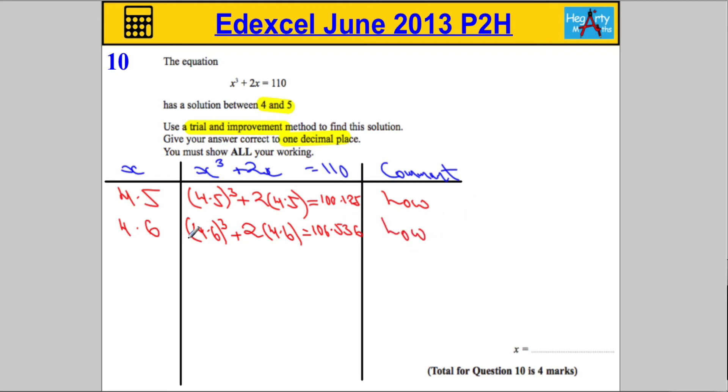So we're going to go again. We need to choose a bigger number again, staying to one decimal place at this point. We're going to choose the number 4.7. I'm going to do the exact same again: 4.7³ plus two lots of 4.7.